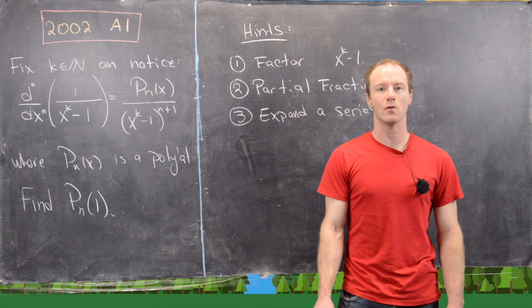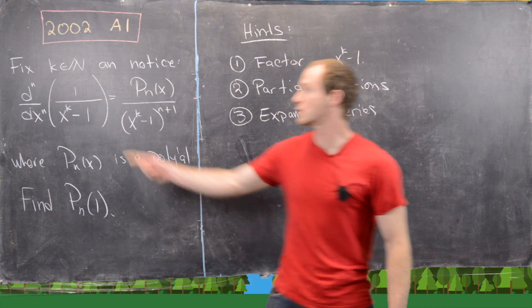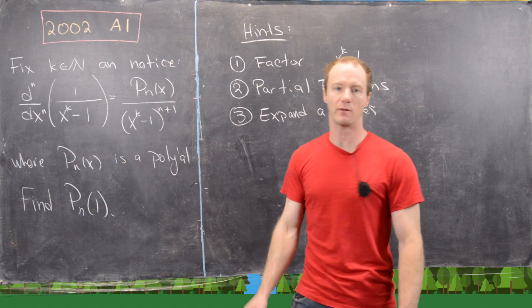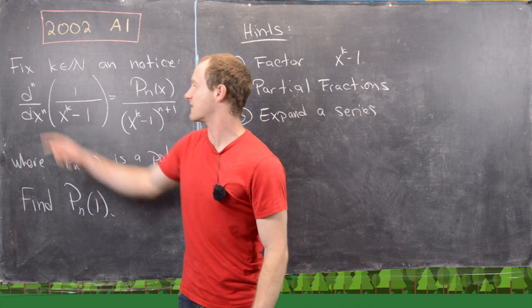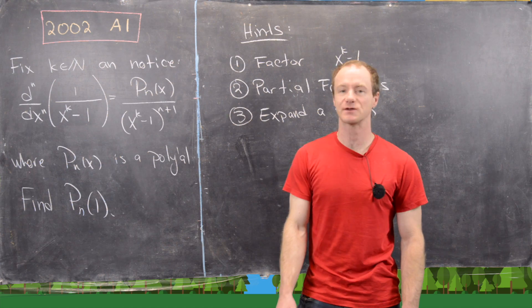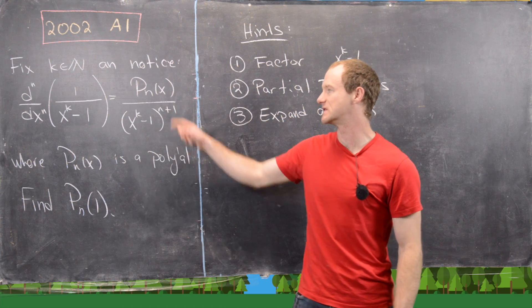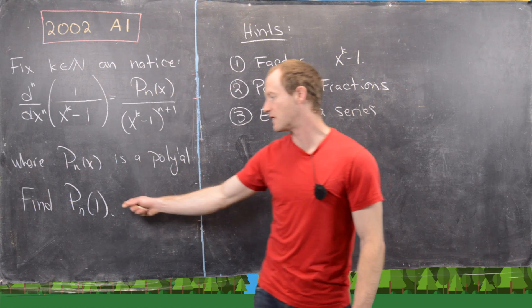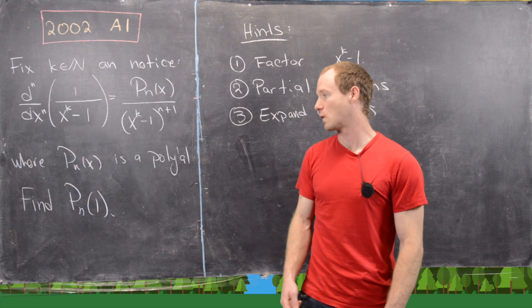Here we're going to look at a solution to problem A1 from the 2002 Putnam. We want to fix some natural number n, and notice the following fact given in the problem: the nth derivative of 1 over x^(k-1) is equal to p_n(x) over x^(k-1) to the n+1, where p_n(x) is just a polynomial. The goal is to find the value of this polynomial when you plug in x equals 1.